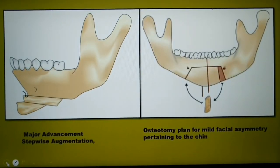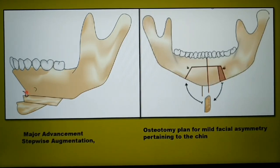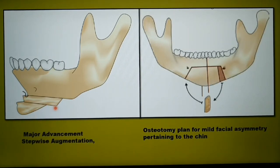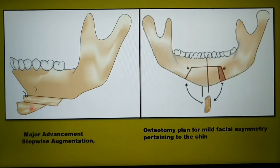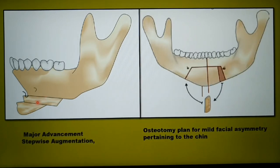For major advancement of the chin, you can perform a stepwise augmentation — the osteotomized inferior segment is cut and sliced more than once, creating more than one horizontal segment, and both segments can be moved forward. However, this is now a less commonly used technique due to the advent of rigid internal fixation, which allows the inferior segment to be fixed however far it is moved.